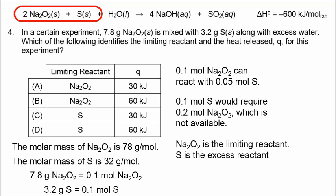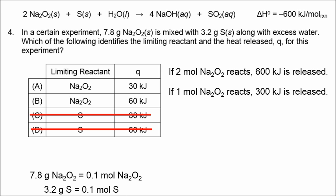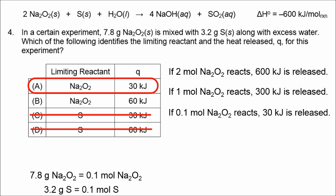Now we know our answer is either A or B. With respect to the heat involved, 2 mols of sodium peroxide release 600 kilojoules of heat, so 1 mol releases 300 kilojoules, and 0.1 mol of sodium peroxide would release 30 kilojoules. The correct answer is A.